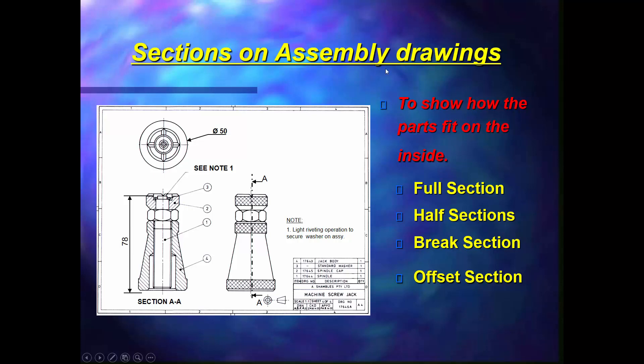Here we've got sections on the assembly drawing which shows you the inside workings of the components. Here we've got a full sectional front view on AA. AA is cut right through and it's showing the full workings of it. Bolts we don't cut through, and nuts we don't cut through.